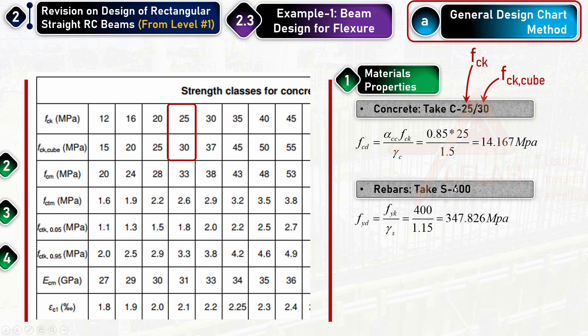For the steel, grade S400 has a characteristic yield strength of 400 MPa. The design yield strength fyd = 400 / 1.15 = 347.836 MPa.